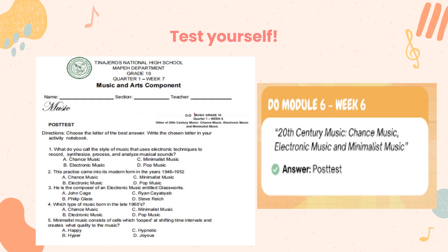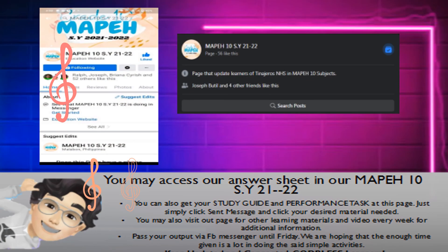You are a good listener. Now test yourself by answering the module entitled 20th Century Music — chance music, electronic music, and minimalist music. Once done, you may submit your answer to your MAPEH teacher via FB Messenger. You may access our answer sheet in our MAPEH 10, school year 21 to 22. You may also visit our page for other learning materials and videos every week for additional information. Remember that you need to pass your output via FB Messenger within 5 days. Thank you for listening and for watching. Take care and God bless. Stay connected and be updated. Thank you, learners.